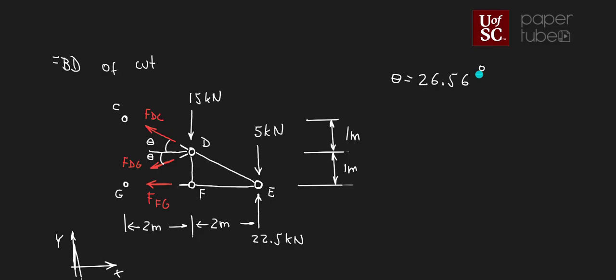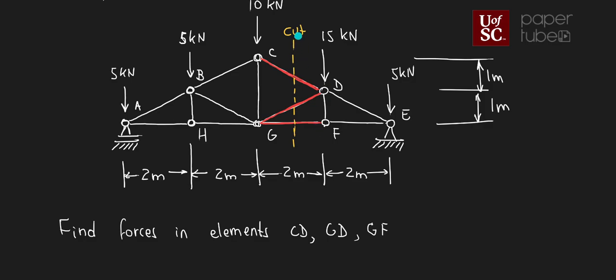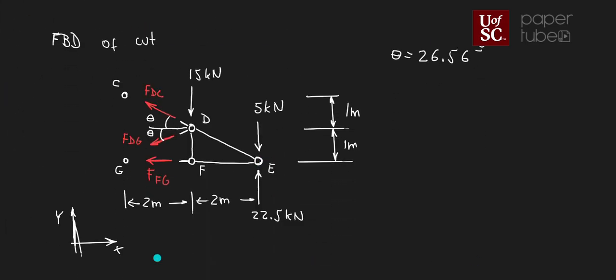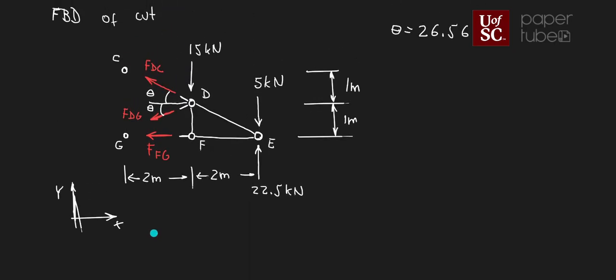It's extremely important to correctly draw the free body diagram of the cut. The first thing is to identify where to make the cut, and then the second part is to draw the free body diagram. What I've done is cut the structure and erase the left-hand side, placing unknown forces at the three cut locations. That's how I find this free body diagram.